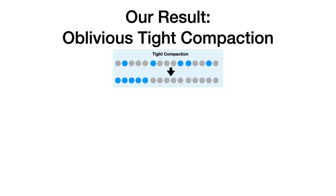Besides our main result, we also have another result that might be of independent interest. A key building block in our construction is oblivious tight compaction. In that problem, we have an array of elements in the memory in which some of them are marked. The goal in oblivious tight compaction is to move all marked elements to the beginning of the array. We don't require stability — we just ask that all marked elements will be moved to the beginning of the array.